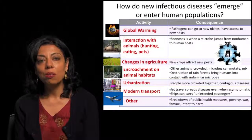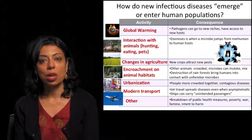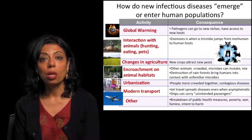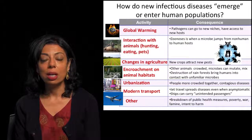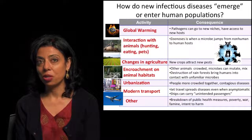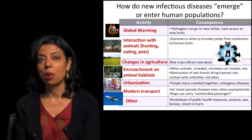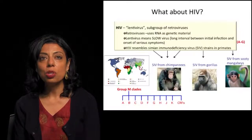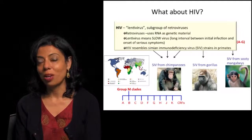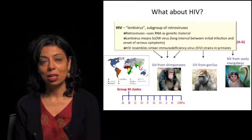Finally, catastrophic events like breakdown of public health measures, poverty, war, and famine have all led to pathogens entering human populations. To talk more specifically about HIV, we have to first describe what HIV is.